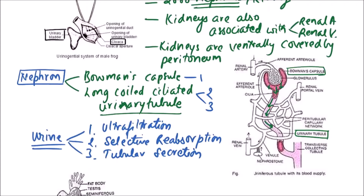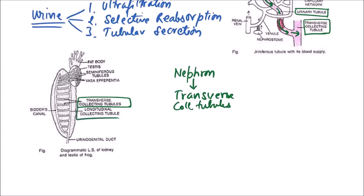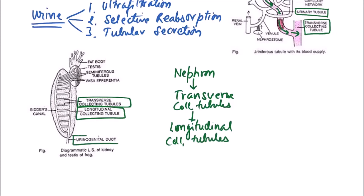From the nephron, the nephric filtrate moves into the transverse collecting tubules, then into the longitudinal collecting tubules.